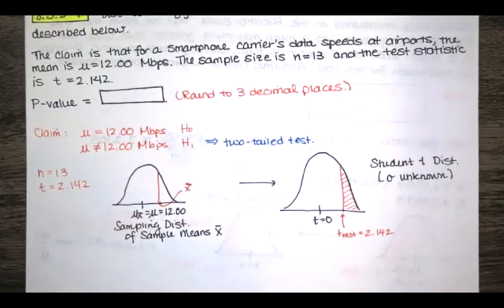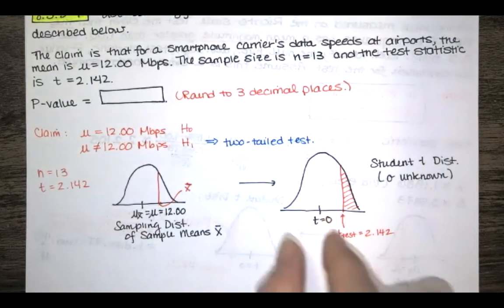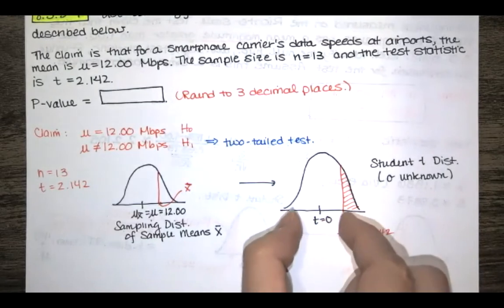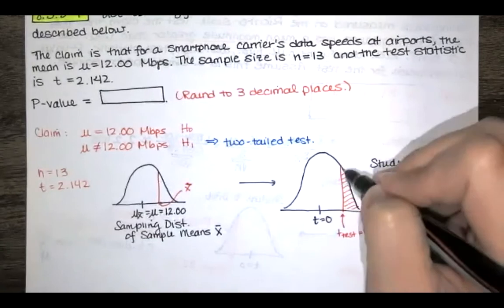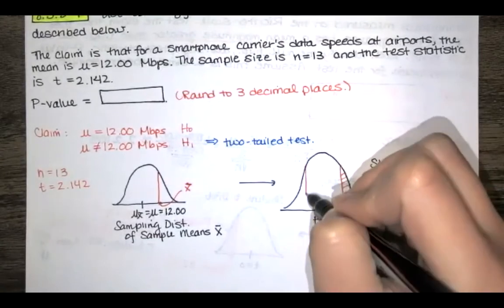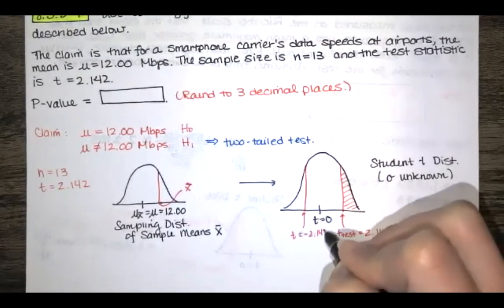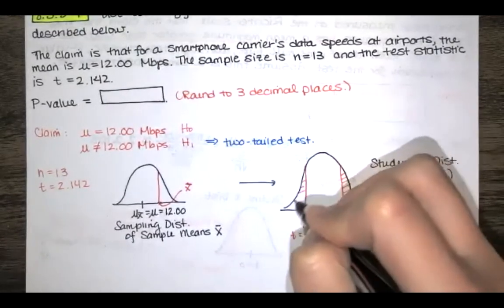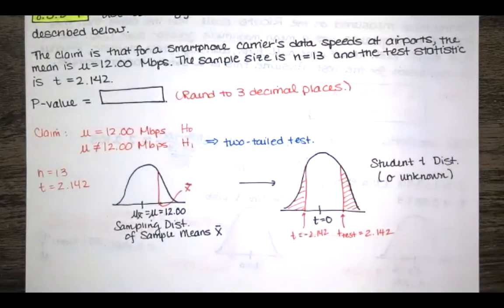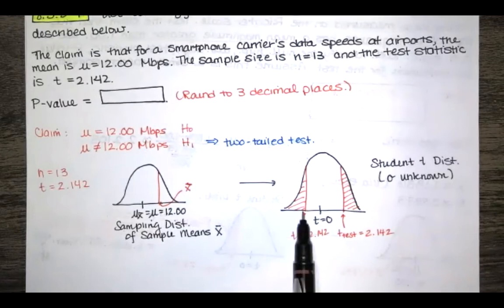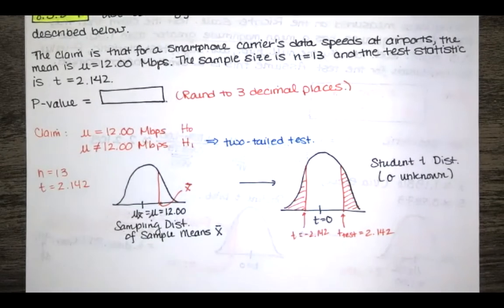But when we're talking about a two-tailed test we don't care if we're too low or too high so we want all the test statistics that are that distance from t equals zero. So I'm going to go to the other side by symmetry this will be t equals negative 2.142 and I'll want that area as well. So I'm saying what's the probability of getting a test statistic in this range or in this range the probability is the associated area under the curve and that's the p-value.